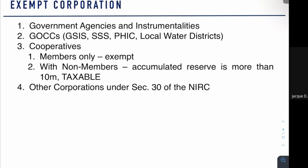Next, we have cooperatives. For members only, they are considered exempt. However, with non-members, they are considered taxable. Cooperatives are exempt because there is a common social purpose for all members, and it is for the benefit of all those members. As a fiscal incentive, a members-only cooperative is exempt because everything is contributed by and accrues to the members. If it is revolving around only the members, it is exempt. However, if there are transactions with non-members and accumulated reserves exceed 10 million pesos, it becomes taxable like a corporation.